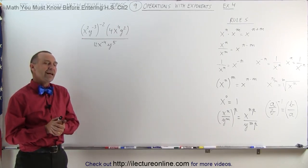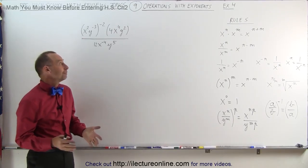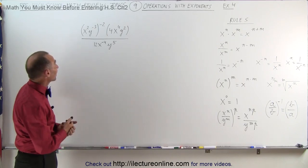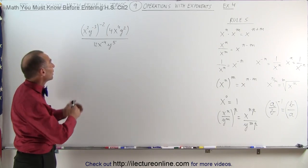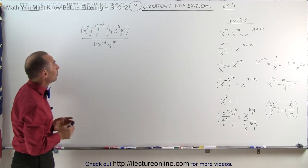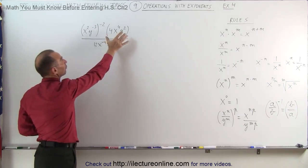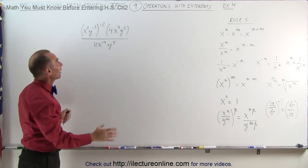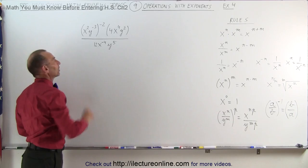Welcome to ElectronLine. Now for something a little bit more complicated. Notice in the numerator we have (x²y⁻³)⁻² multiplied times 4x⁴y² and divided by 12x⁻⁴y⁵.